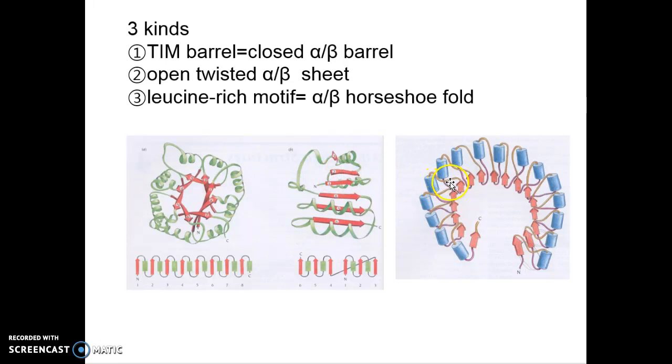The third type is leucine-rich motif, or called alpha/beta horseshoe fold. Here you can see one side of parallel betas, part of the betas in contact with solvent, while the other side of betas interacts with loops and alphas.